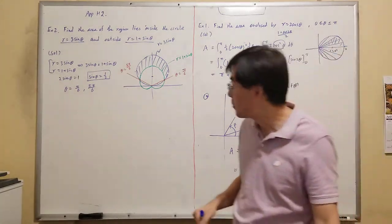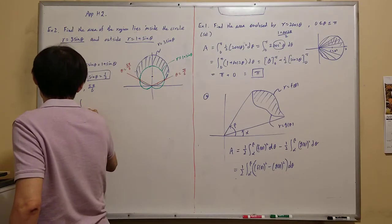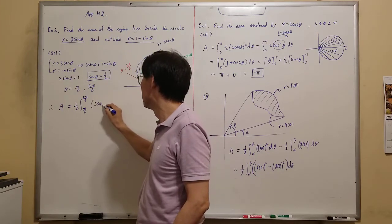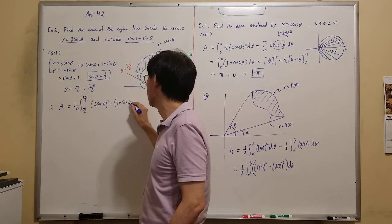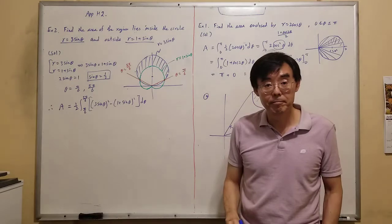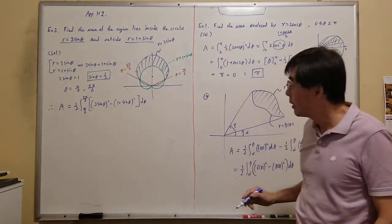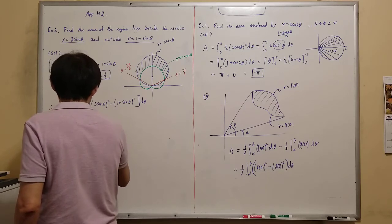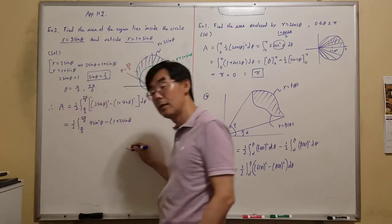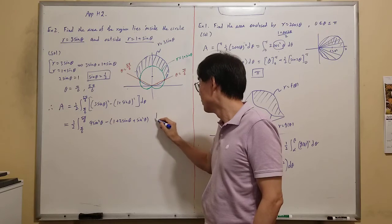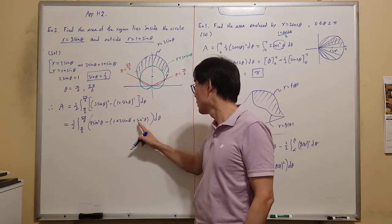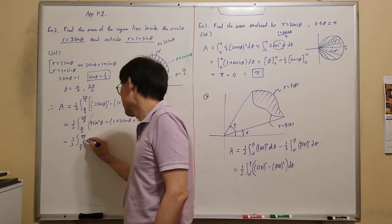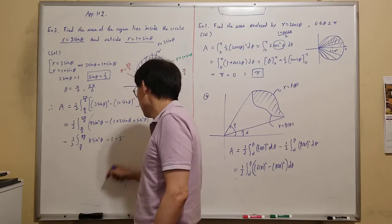The area is: A = one half ∫_{π/6}^{5π/6} [(3sinθ)² − (1 + sinθ)²] dθ. Expanding the integrand: 9sin²θ − (1 + 2sinθ + sin²θ) = 8sin²θ − 1 − 2sinθ. Applying the power reduction formula sin²θ = (1 − cos2θ)/2, the 2's cancel and we get 4(1 − cos2θ) − 1 − 2sinθ.